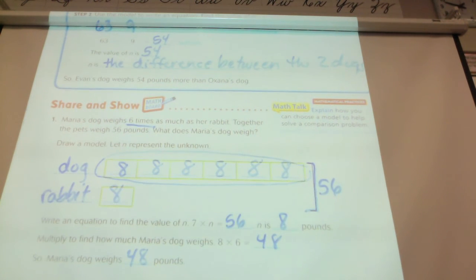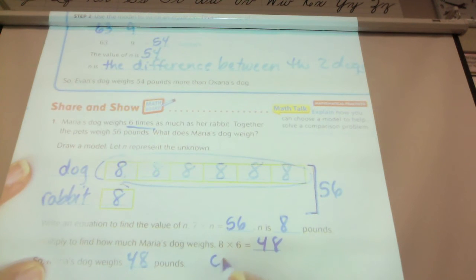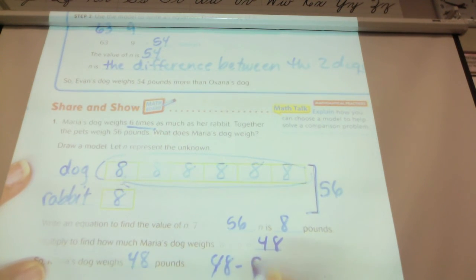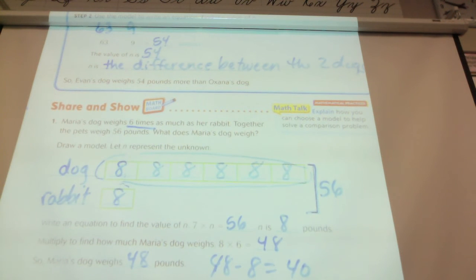What if I asked you what's the difference between the weight of her dog and her rabbit? The dog weighs 48 pounds, and the rabbit weighs eight, and so when you subtract them, there's a difference of 40 pounds.